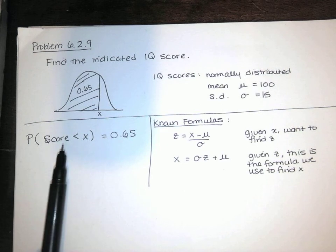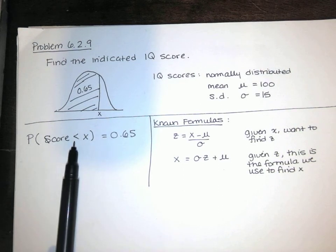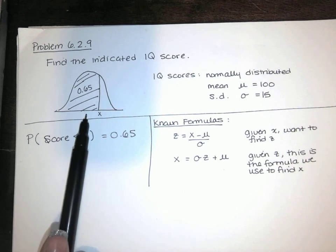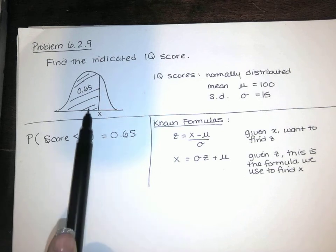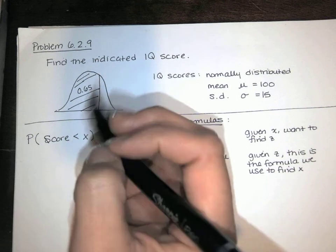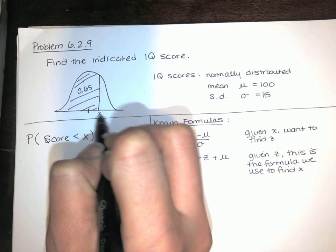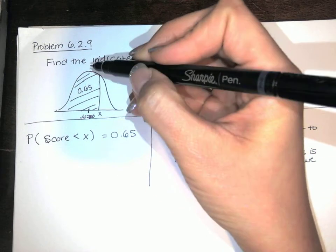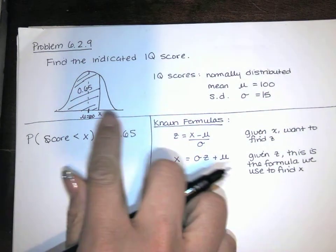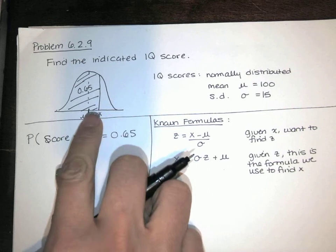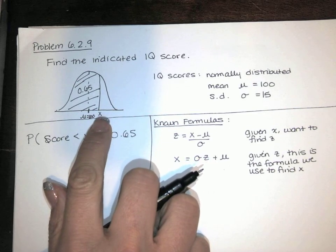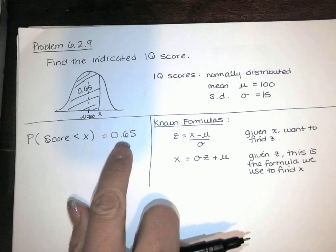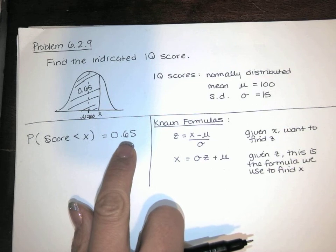They are telling us that the probability that a score is less than x is 65%. So this represents area in our table. We want the area to the left to be 65%. Now, since 65% is greater than 50%, we know it has to be greater than the mean. This x value has to be greater than the mean, which is 100, because the mean separates the lower 50% from the upper 50%. That tells me if my x is above the mean, the corresponding z score has to be positive.